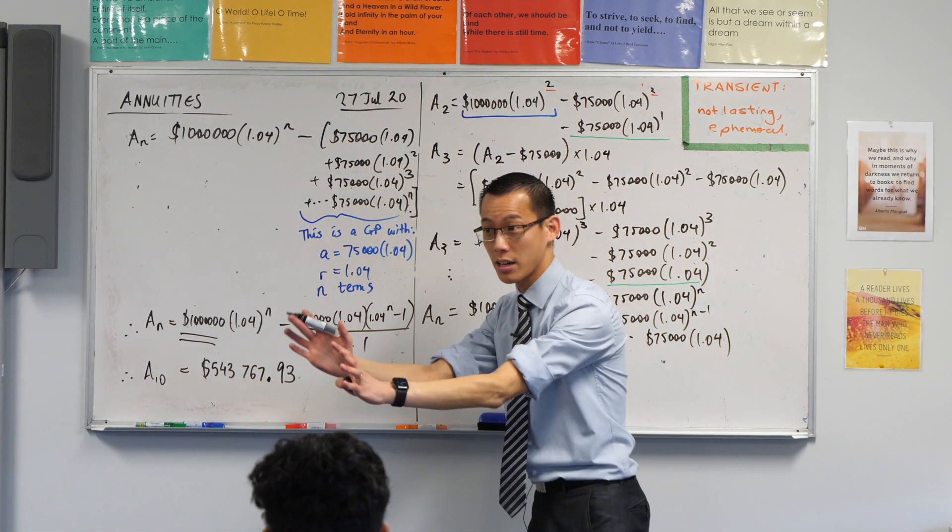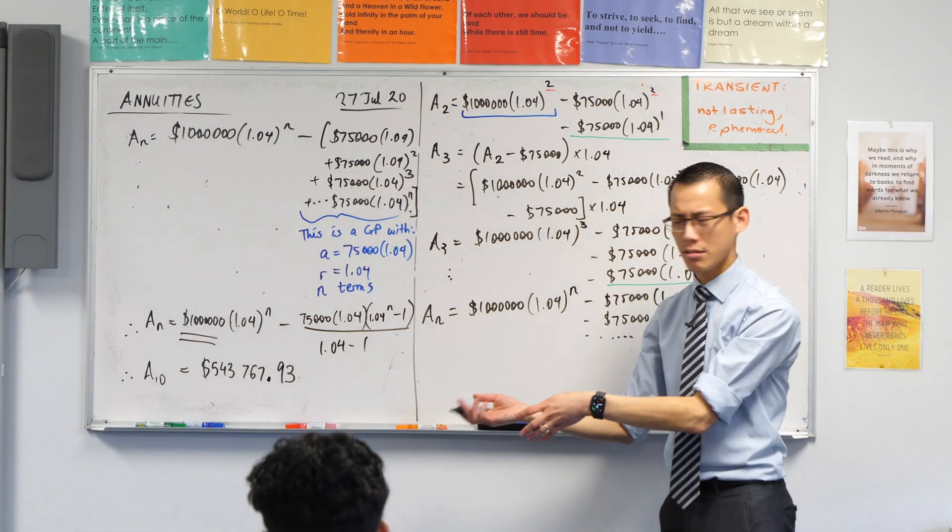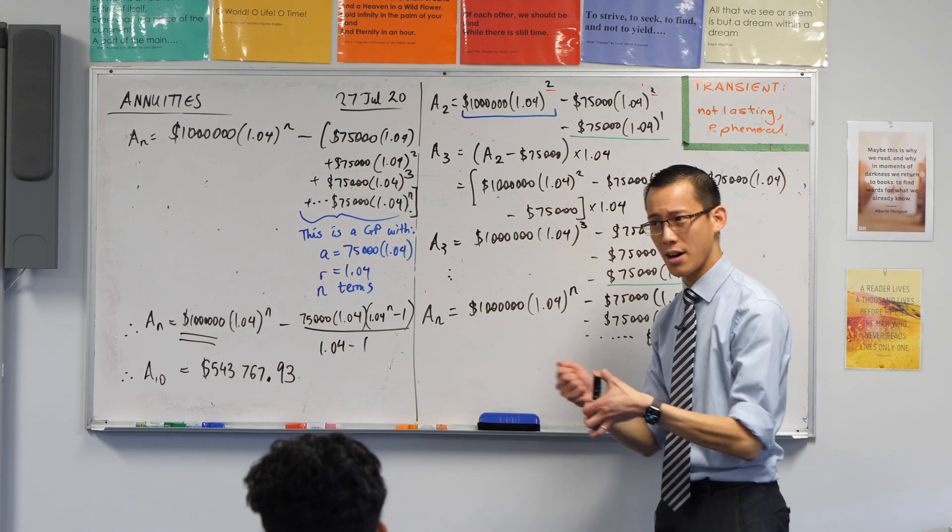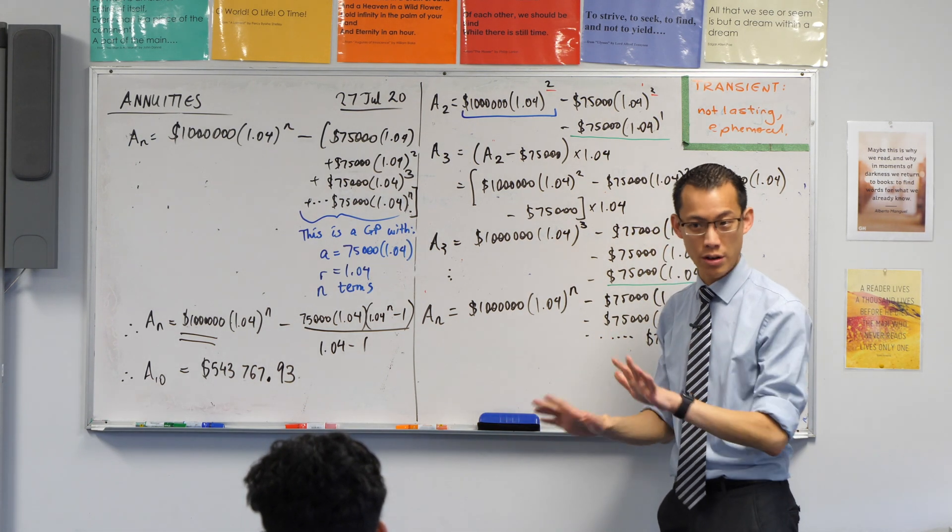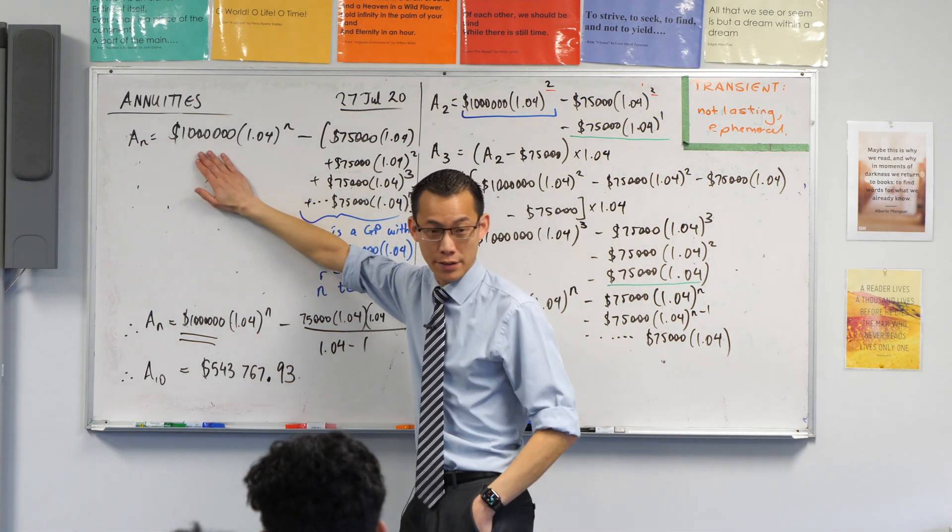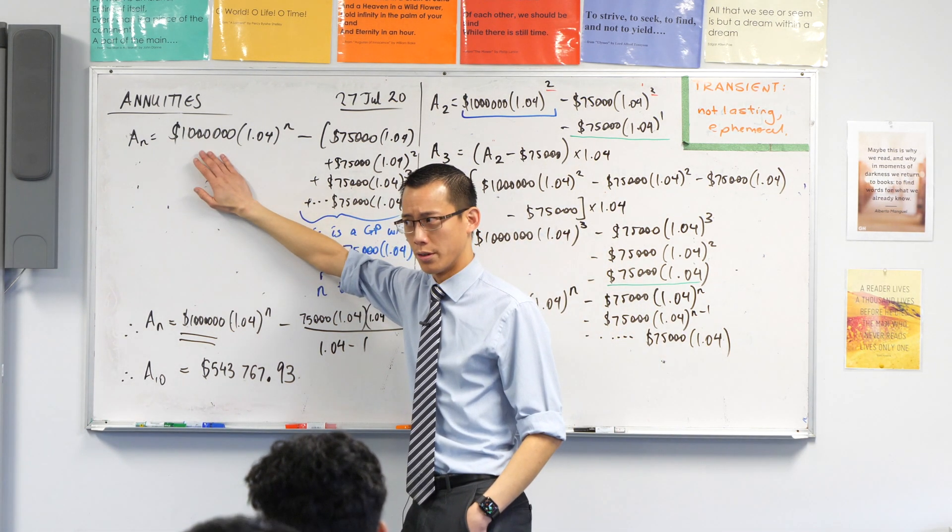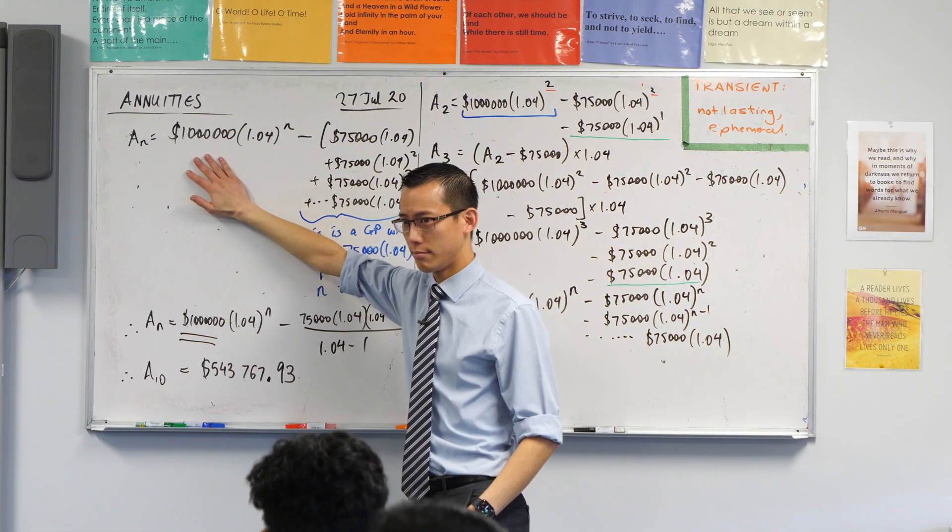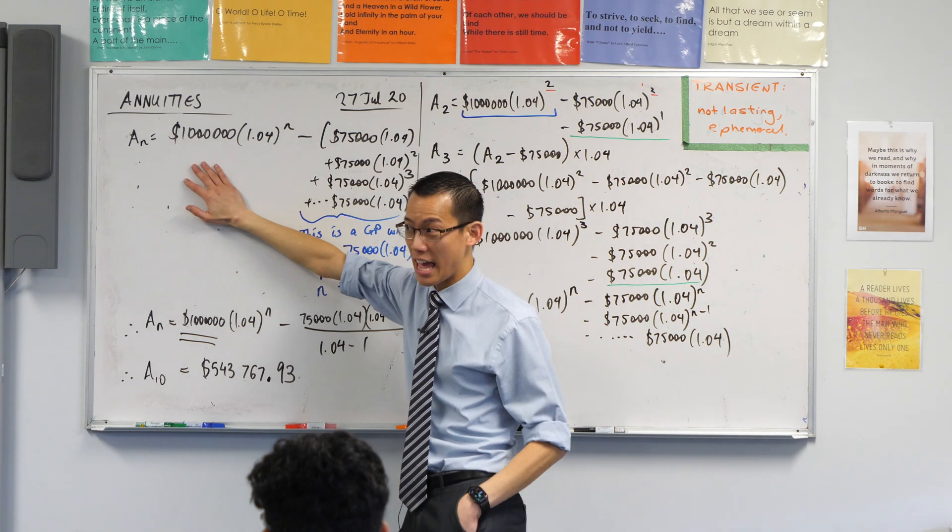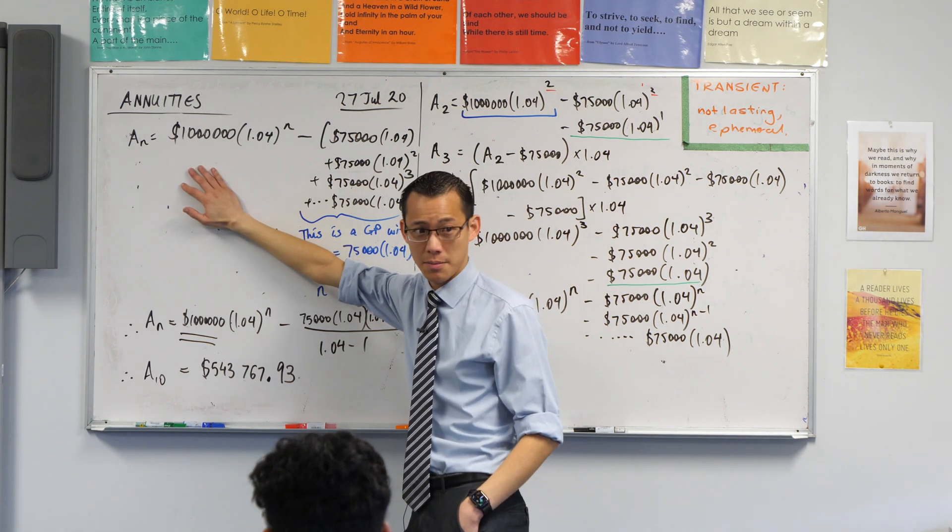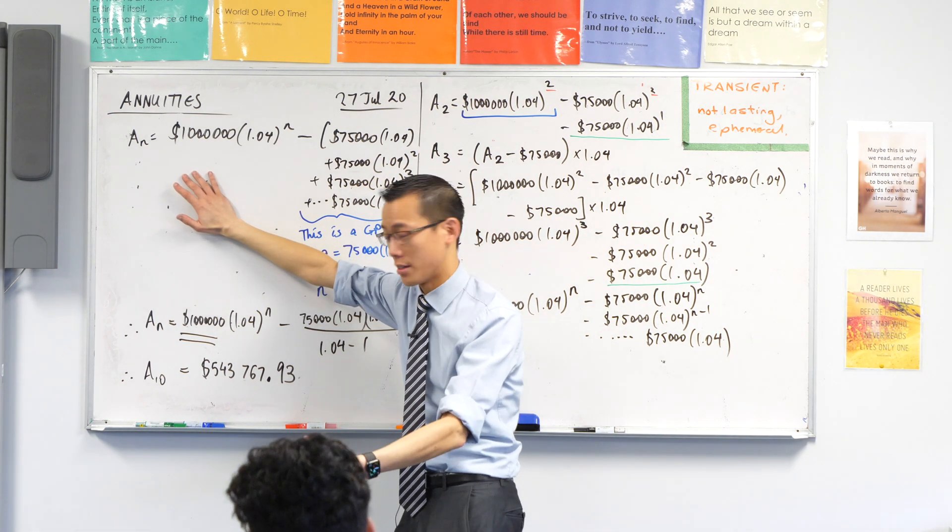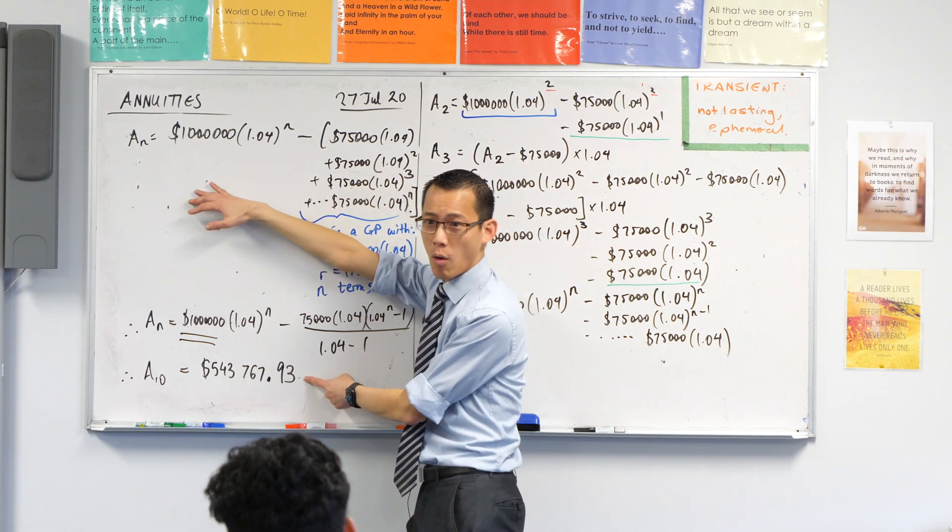Alright, now, quick sense check. Sense check. Does that make sense? Yes. 10 years. Pulling 75,000 every time. If there was no interest, if there was no interest, and you pulled $75,000 out every year for 10 years, how much would you have withdrawn? 10 lots of $75,000, right? $750,000? So you would have had a quarter of a million dollars at the end, $250,000. This is a lot more than that. Why is it so much more?